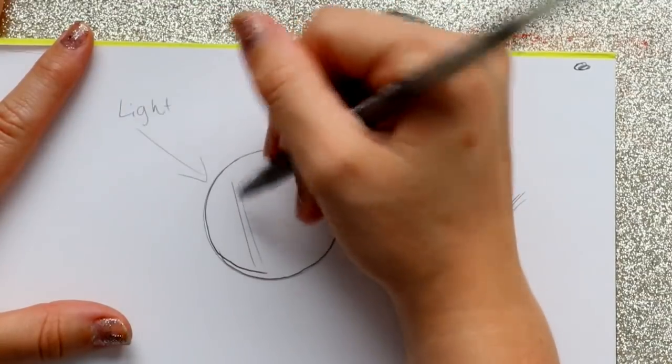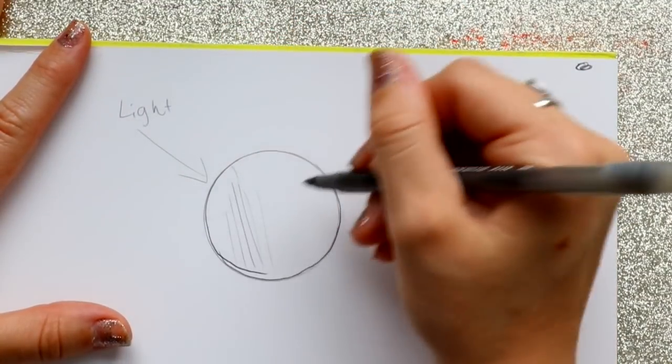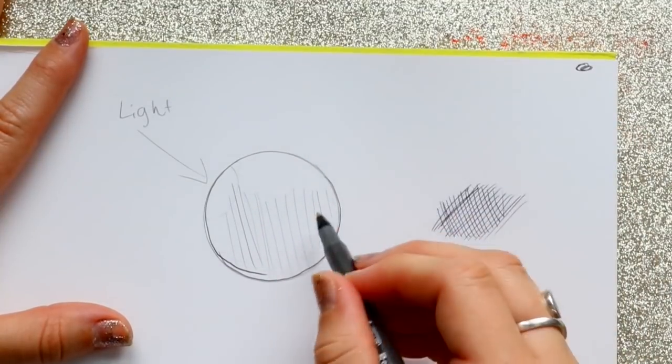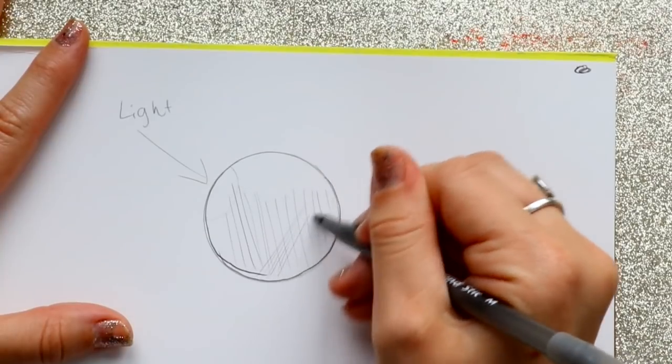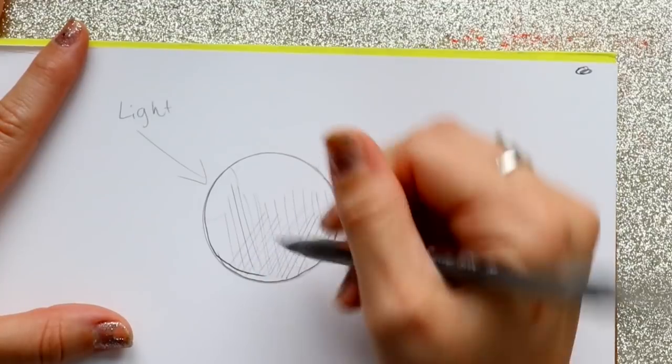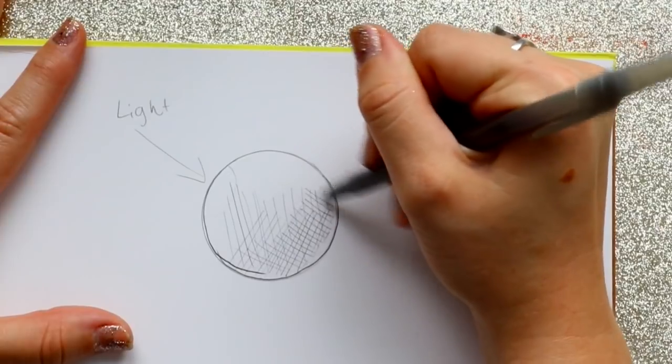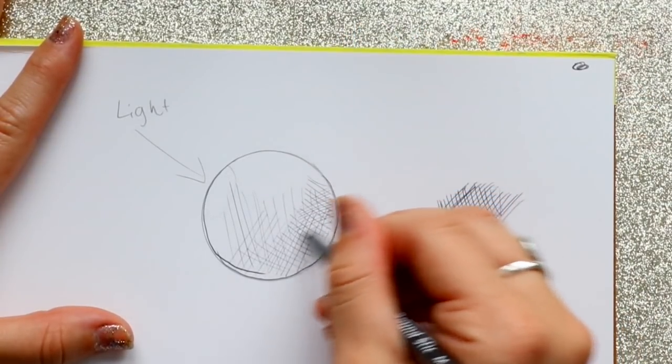So what you could do with cross-hatching is, if the light is hitting right here, so I have my light source hitting right here, that means my shading is probably going to start over here. It is literally just crossing over and over and over. If I go over it, the more I go over my cross-hatching, the stronger my shading gets.